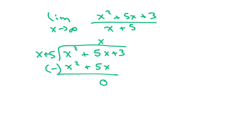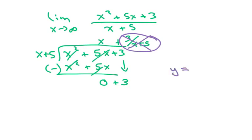And you're going to get 0. Bring down the 3. And you notice that you can't do anything more because this is all zeroed out. So this would be your remainder. This would be plus 3 over x plus 5. Well, this is insignificant when you're talking about limits. So we disregard it just like we did in the other ones. And so our oblique asymptote would just be y equals x.